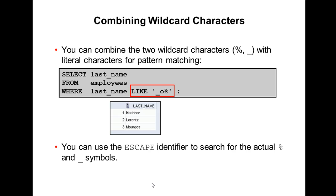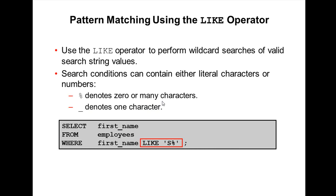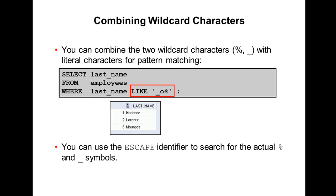So, underscore denotes one character and percentage denotes zero or many characters. We can combine both percentage and underscore — these two wildcard characters — with a literal string for pattern matching.